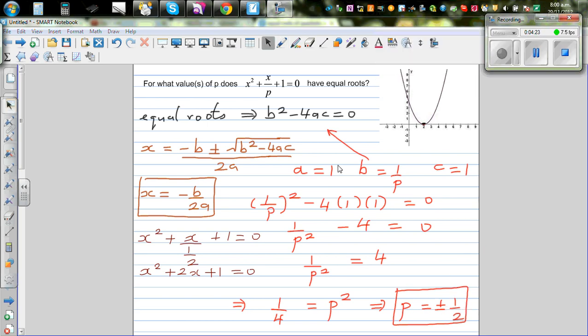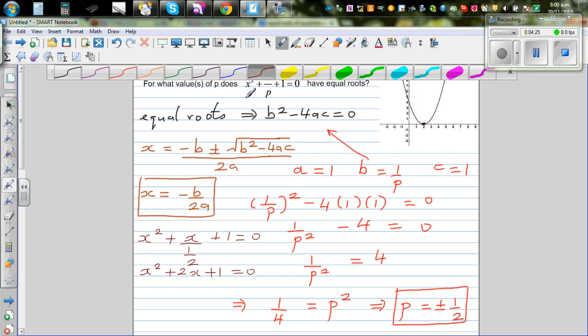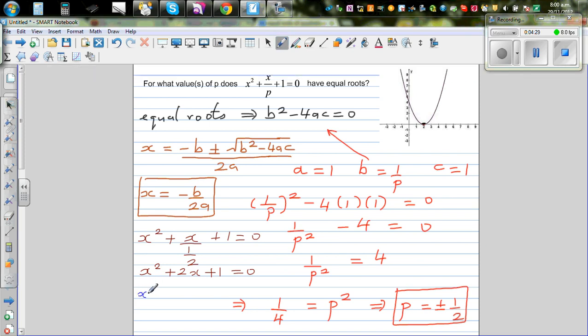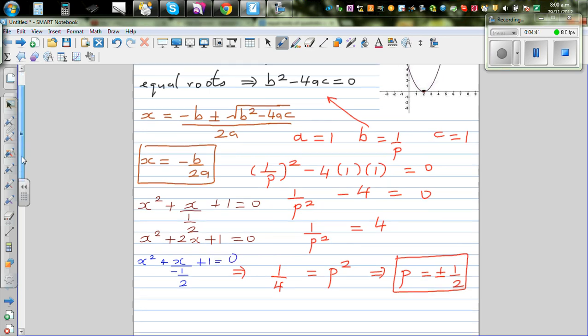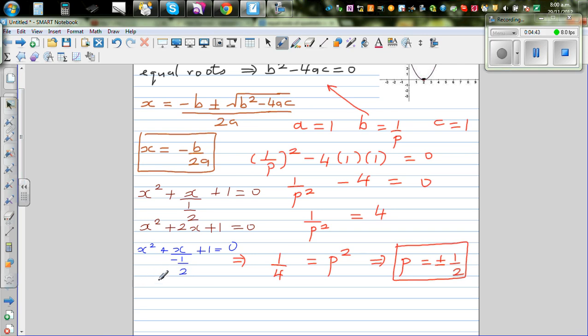If you put negative half back in this equation, we will get x squared plus x divided by negative half plus 1 equal to 0. So dividing by negative half is same as multiplying by negative 2. So this simplifies to x squared minus 2x plus 1 equal to 0.